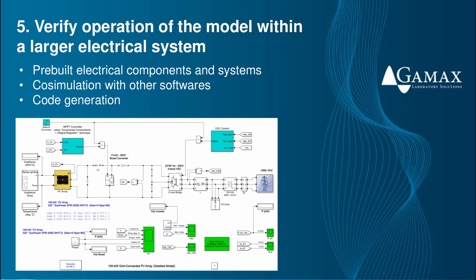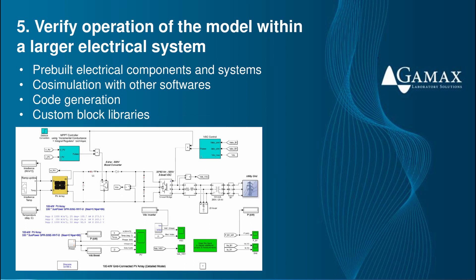Third, Simulink enables us to generate code from models that can be integrated into other simulation software. After we have designed and tested our power converter controller in Simulink, we can code and integrate it into any other software package capable of running C or C++ code, including certain SPICE circuit simulators. And fourth, Simulink supports custom block libraries, enabling third-party hardware and software companies to develop libraries of their components that we can incorporate directly into our design models.